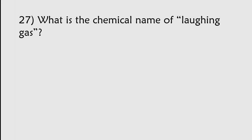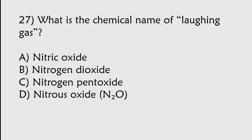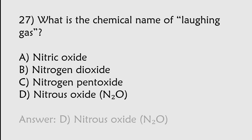What is the chemical name of laughing gas? Nitric oxide, Nitrogen dioxide, Nitrogen pentoxide, Nitrous oxide. The correct answer is option D. Nitrous oxide is the chemical name of laughing gas.